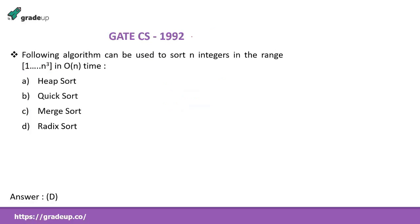Then a very old question. Very old. In 1992. Following algorithm can be used to sort n integers in the range 1 to n cube in order of n times. You want to sort n integers in order of n times. Can heap sort do? Can heap sort? No. Why? Heap sort will take n log n time. Can quick sort do? No. In best case or average case it will take n log n. In worst case it will take n square. Can merge sort do? No. Always take n log n. The remaining answer is radix sort. In radix sort it will sort in linear time for sure.